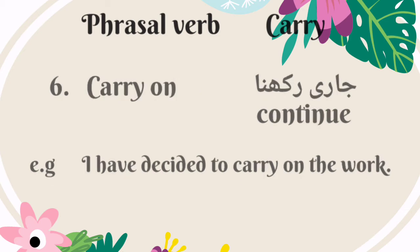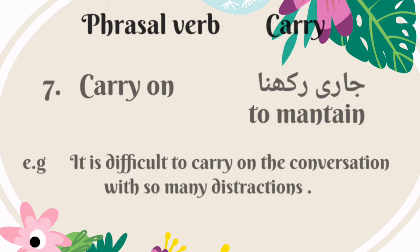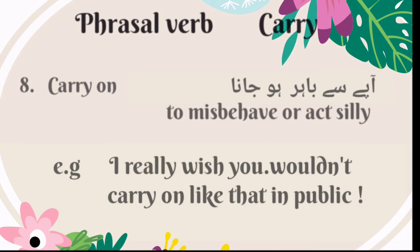The sixth phrasal verb is 'carry on.' It means continue — Urdu mein is ka matlab hai jaari rakna. For example: I have decided to carry on the work. 'Carry on' also means to maintain — for example: it is difficult to carry on the conversation with so many distractions. A third meaning is to misbehave or act silly — Urdu mein is ka matlab hai aapai se baahir ho jaana. For example: I really wish you wouldn't carry on like that in public.